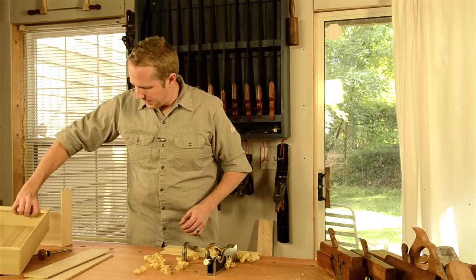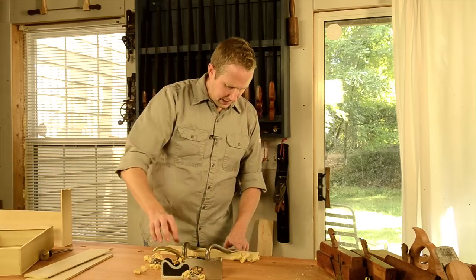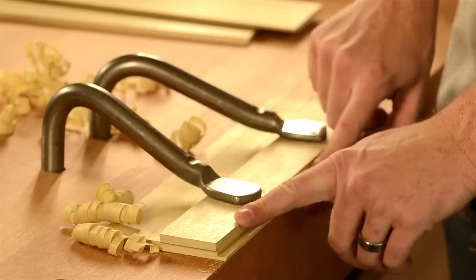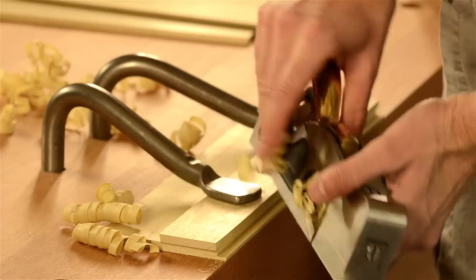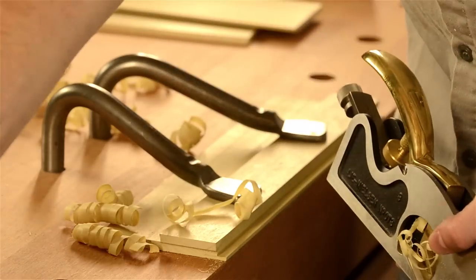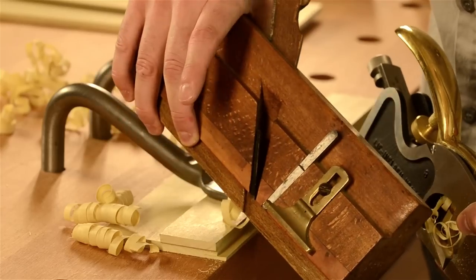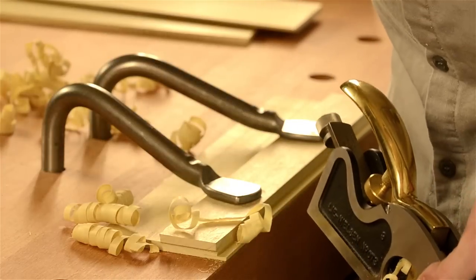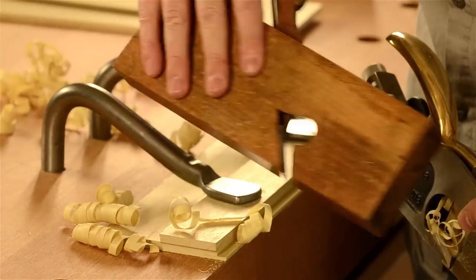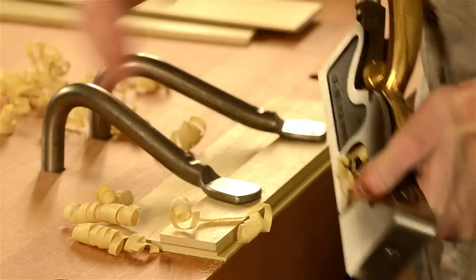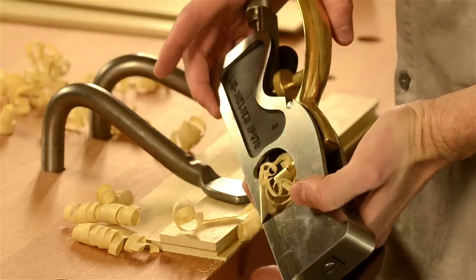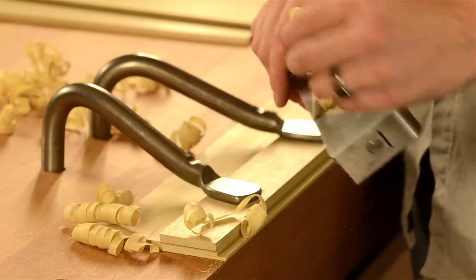So what I did was I simply cut one rabbet here. I put a fence here and I used the shoulder plane, and you could just as easily use a moving fillister plane like this or a rabbet plane like this. I just happen to have this shoulder plane tuned up, and so that's what I used and it's nice and sharp.